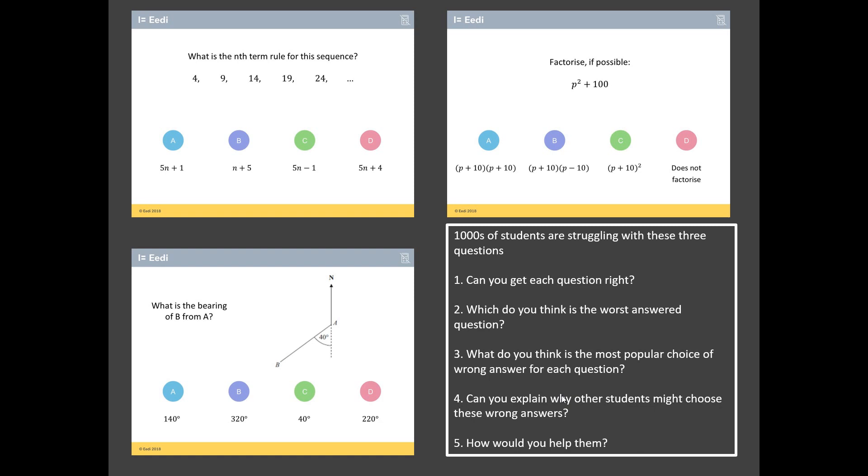And I've got five challenges for you. So first off, can you get each of these questions correct? And that's going to be easier said than done because these are questions that students are finding really difficult. Second, out of these three questions, what do you reckon the worst answered question is? And then I wonder if you can predict why might students pick these popular wrong answers. And then the final challenge, and I think this is the hardest of them all, imagine you're sat next to somebody who's absolutely convinced that their choice of wrong answer is right. How would you help them? So what I suggest you do now is you pause the video, work your way through these three questions, bearing my five challenges in mind. Good luck.